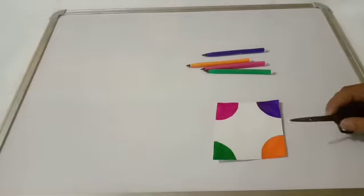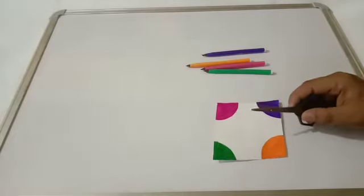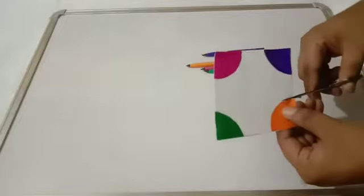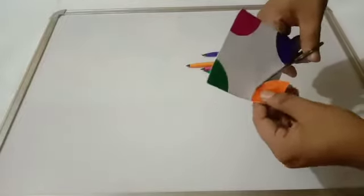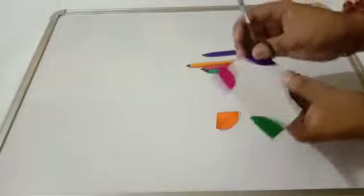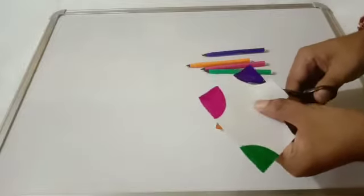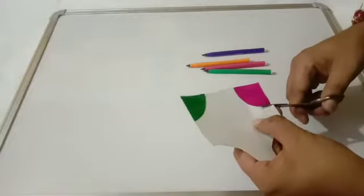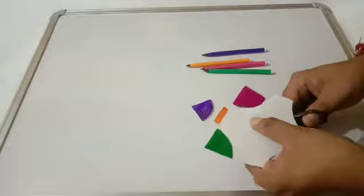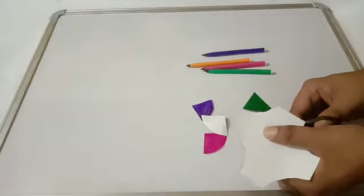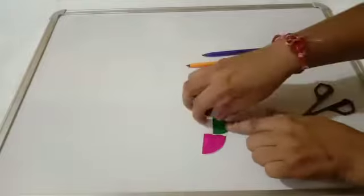Now cut the four arcs from the quadrilateral with the help of scissors. Students, beware of using these objects as they have sharp edges. I am cutting the first arc from this quadrilateral. First arc I have cut. Now I am cutting the second one. Be very careful when you are using scissors. This is the second arc. Now the third arc of a different color. Now the last one, the green arc. I have cut all four arcs.